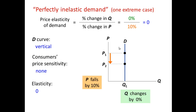Perfectly inelastic means consumers are completely and totally insensitive to a change in price. This is a theoretical concept that rarely exists in the real world, although some people would argue the price of gas in the short run would be perfectly inelastic. In reality, even a small price change causes someone to stop driving, switch to public transportation, or carpool. So perfectly inelastic demand is purely theoretical. If your calculation gives zero, we say it's perfectly inelastic, and as you can see, the curve is actually vertical.